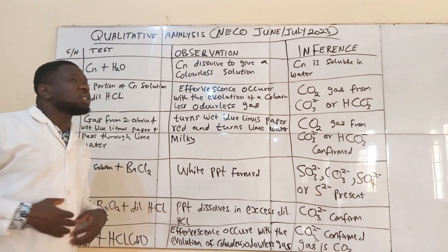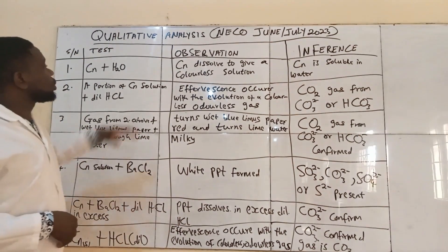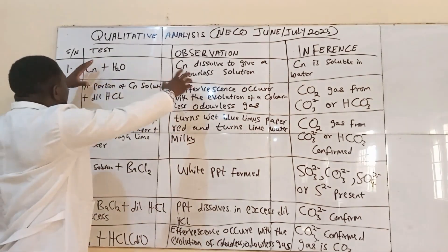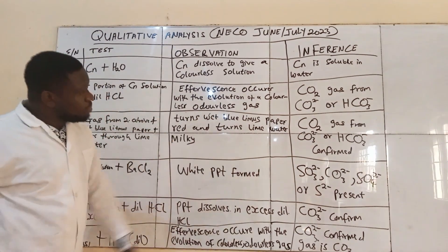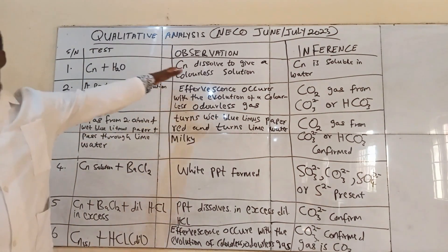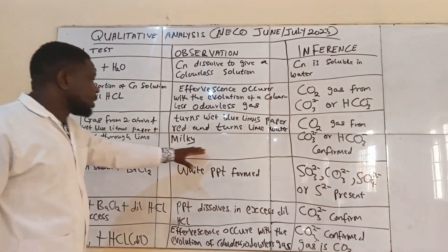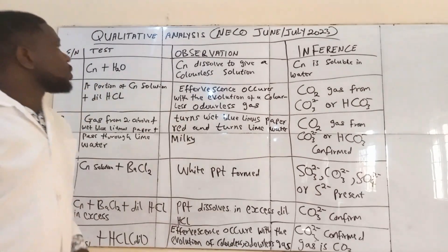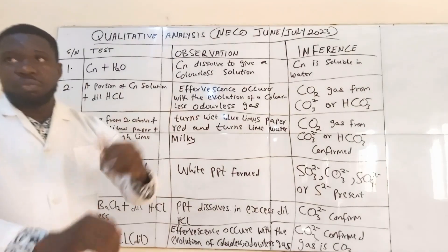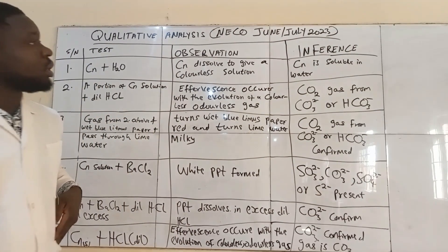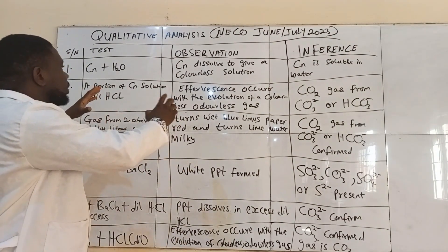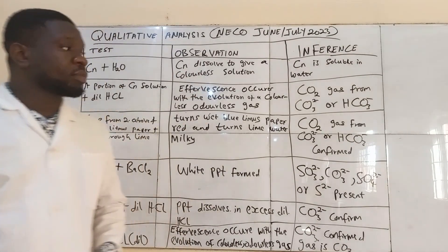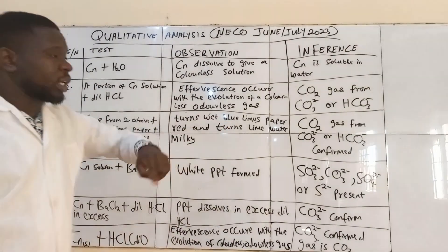The salt we are going to be dealing with is a very soluble salt and a white salt. Here we have carefully written out some of the tests that we carried out on the salt in order to identify the anion contained in the salt. The salt we are given is sodium carbonate, and here we have carefully written out the analysis for the carbonate ion — that's the CO₃²⁻ ion.